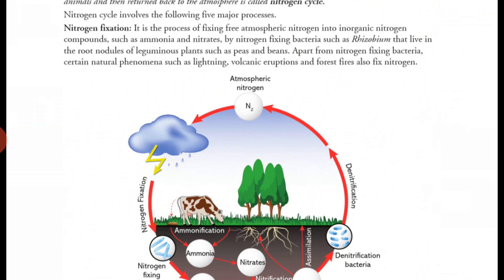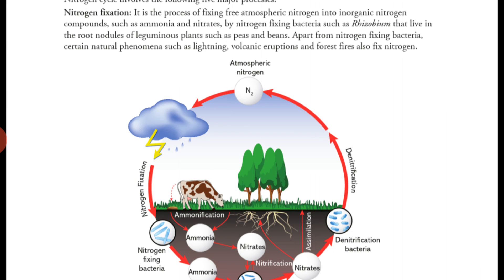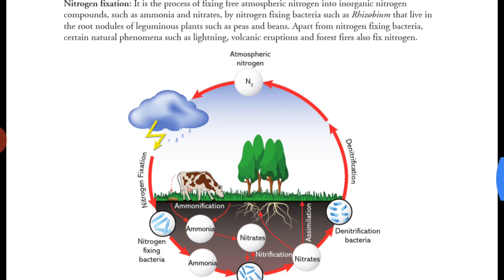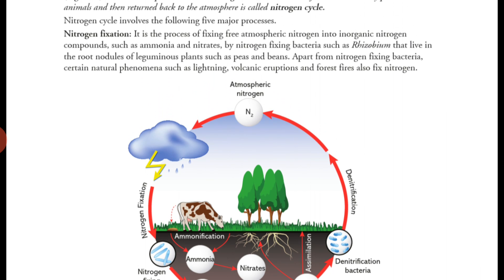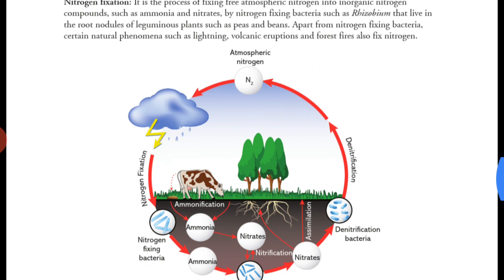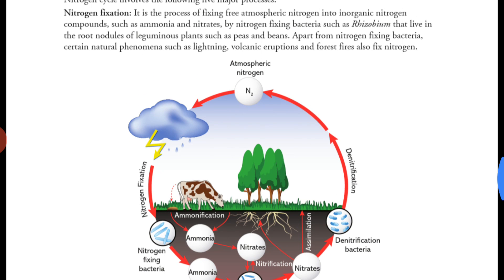Apart from nitrogen-fixing bacteria, certain natural phenomena such as lightning, volcanic eruptions, and forest fire also fix nitrogen by converting it into ammonia and nitrates. Plants can also use ammonia as a nitrogen source. So the first step — nitrogen fixation — is the conversion of free nitrogen into ammonia and nitrates, either through bacteria or natural processes.